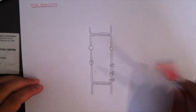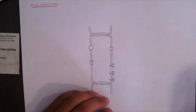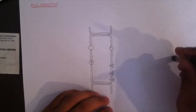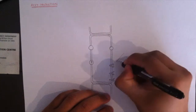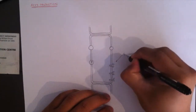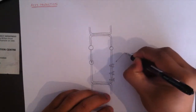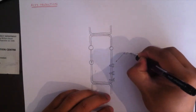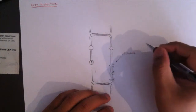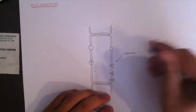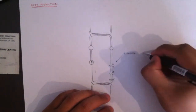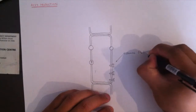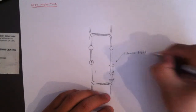Diagrammatically, I'm going to call this one the histamine receptor. This histamine receptor is one of our targets for acid suppression — this is the H2 receptor.